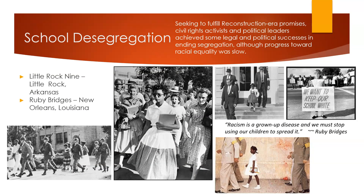The Brown decision ushered in a brief era of massive resistance, particularly in the southern states. In Arkansas in 1957, nine African-American students, later nicknamed the Little Rock Nine, attempted to enroll in Little Rock's Central High School — still a segregated school more than three years after the Brown decision. Governor Orville Faubus initially prevented them from entering, going so far as to call out the Arkansas National Guard to block the students. It was not until the intervention of President Eisenhower, who sent federal troops to enforce the integration and protect the nine students, that the school was finally integrated.